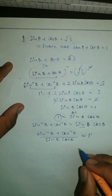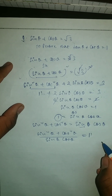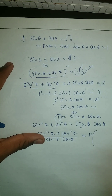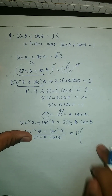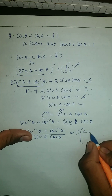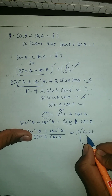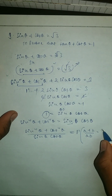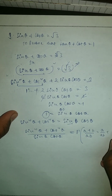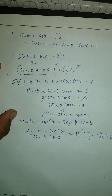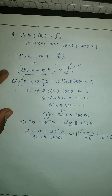Now we are going to use a property. This property is: a plus b upon ab, which is equal to a upon ab plus b upon ab. We apply this type of property for rationalization here.